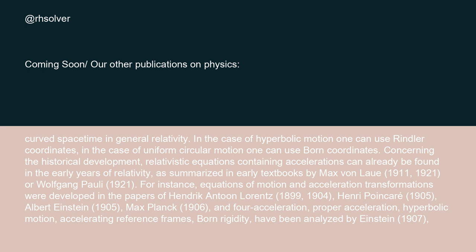Concerning the historical development, relativistic equations containing accelerations can already be found in the early years of relativity, as summarized in early textbooks by Max von Laue, 1911 and 1921, or Wolfgang Pauli, 1921. For instance, equations of motion and acceleration transformations were developed in the papers of Hendrik Antoon Lorentz, 1899–1904, Henri Poincaré, 1905, Albert Einstein, 1905, and Max Planck, 1906.